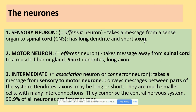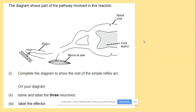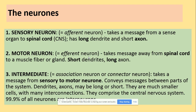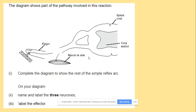Relay or intermediate neurons take a message from sensory to motor neurons — they are in between. Most neurons are actually intermediate neurons. Here we've got a question: the diagram shows part of the pathway involved in a reaction. We've got a finger, a muscle, and a spinal cord. The question is to complete the diagram to show the rest of the simple reflex arc. Three neurons are missing, and you need to name and label those neurons and label the effector.